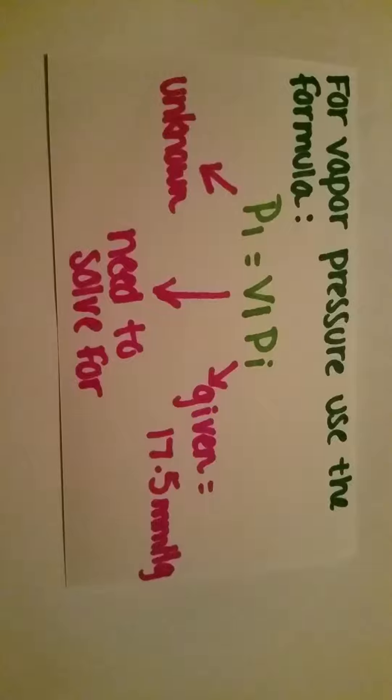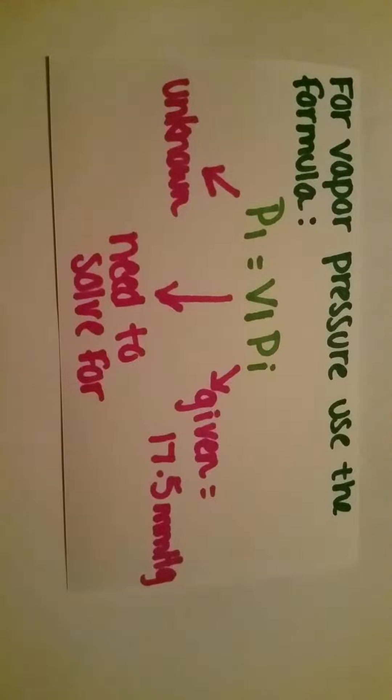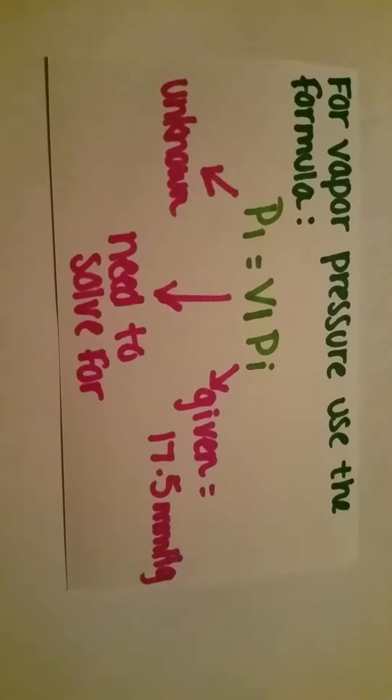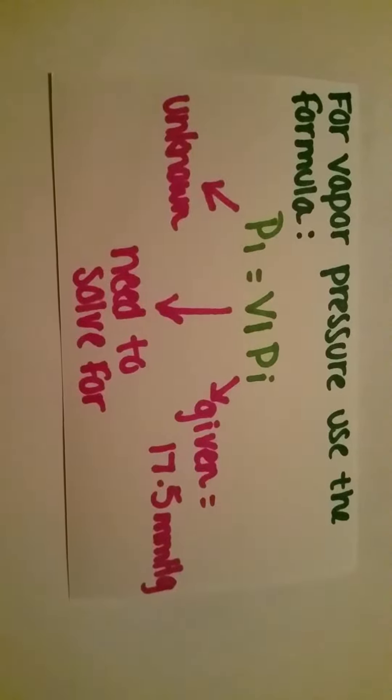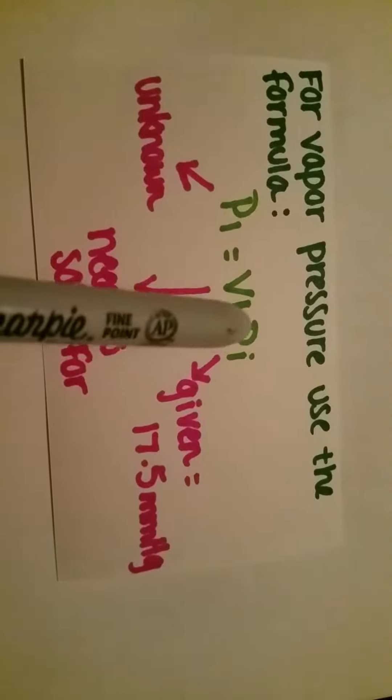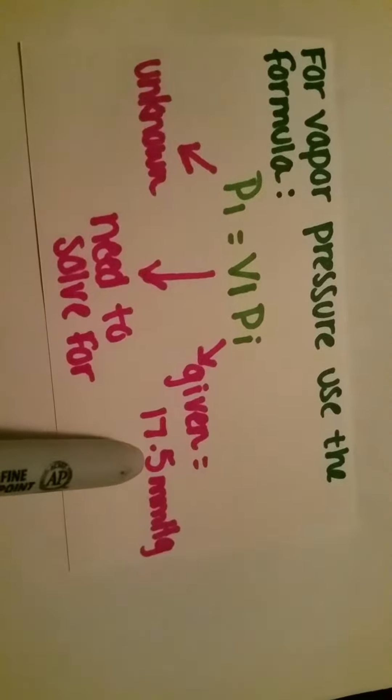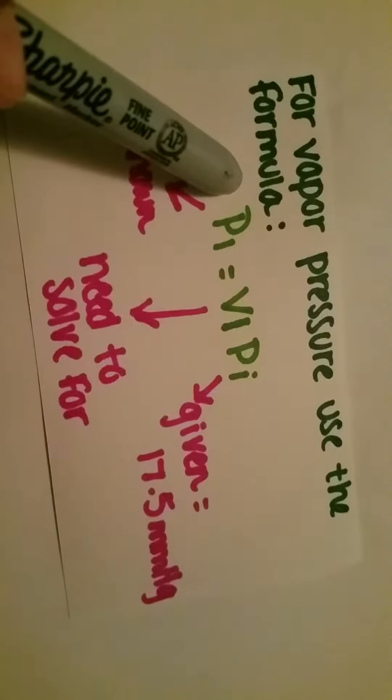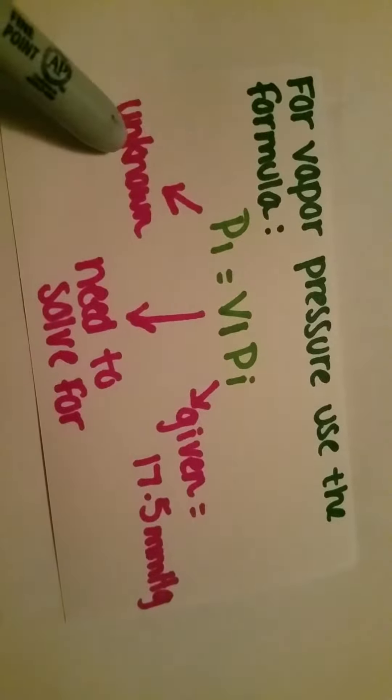The first thing we need to do is identify our formula and our givens. We are going to use the vapor pressure formula. We are given 17.5 mmHg as our pressure. We will solve for the moles next, and the final vapor pressure is our unknown — that is what we are solving for.